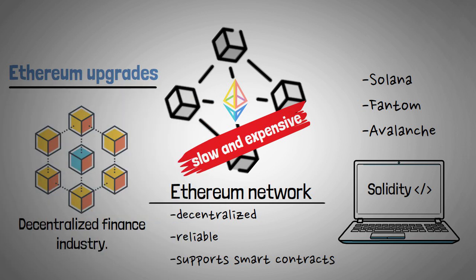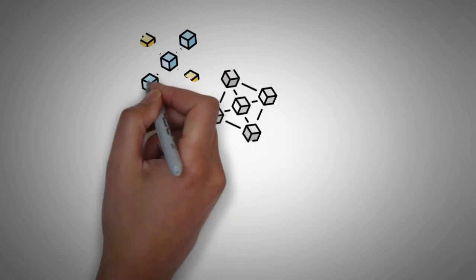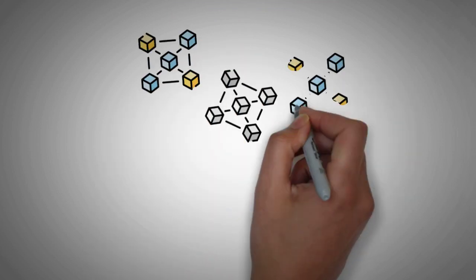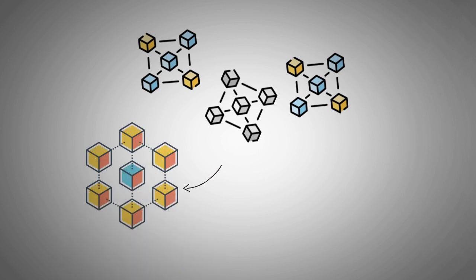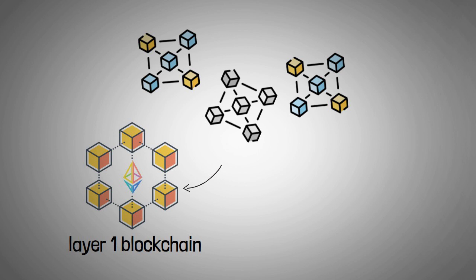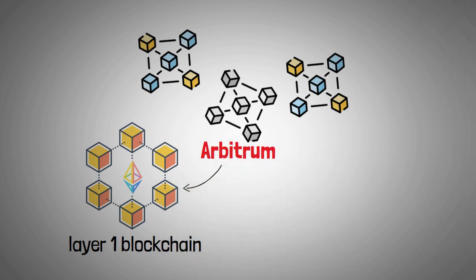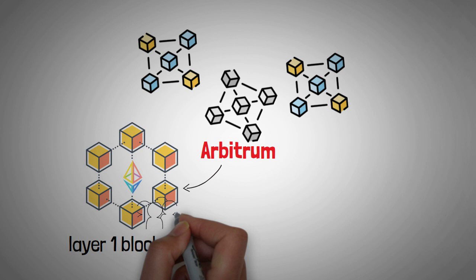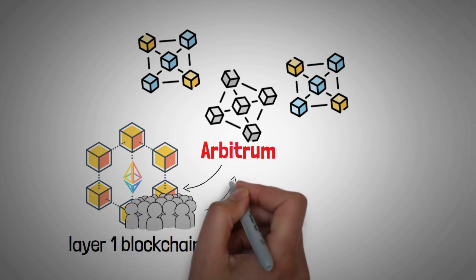While we wait for the Ethereum upgrades to catch up, a new fix for the scaling solutions is starting to pop up. These are pieces of software that sit on top of the base layer of a blockchain — in this case Ethereum — to speed things up. Arbitrum is one such scaling solution and it's become a popular venue for Ethereum users to complete their transactions.